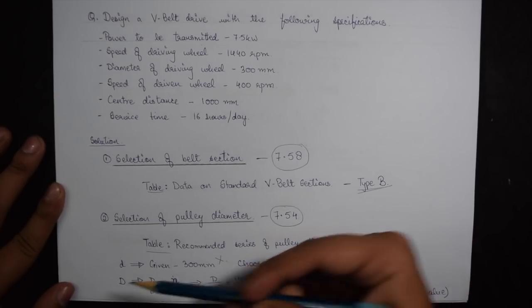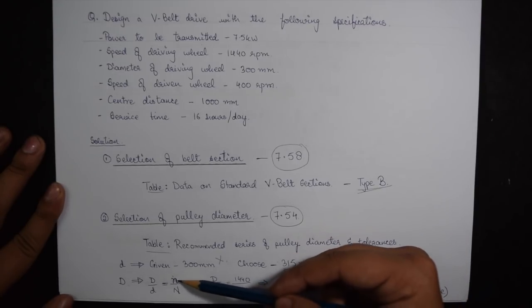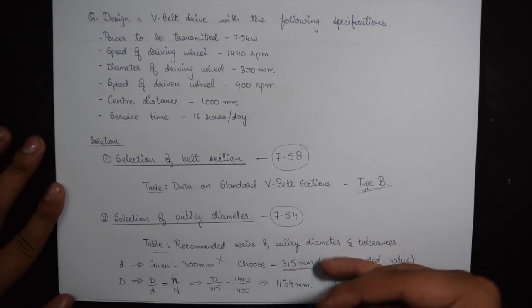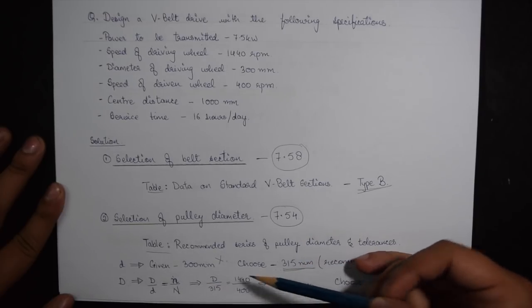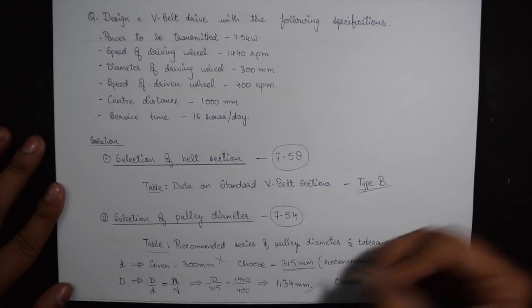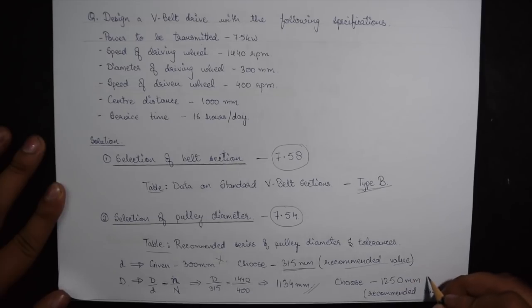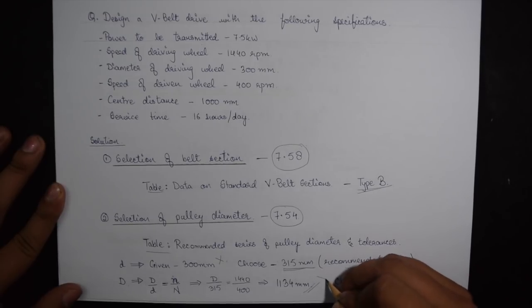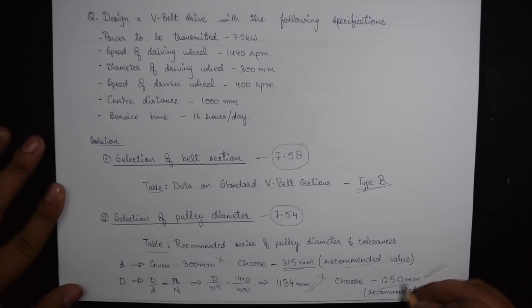For calculating the capital D, we have a formula capital D by small d is equal to small n by capital N. So we know the values of small n, capital N and small d. Putting this we will get the answer as 1134 mm. Now similarly under the same table 1134 is not given. So we will be choosing the very next number which is given which is 1250 mm.